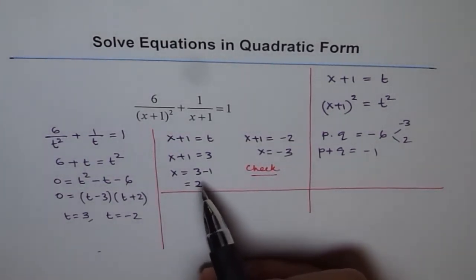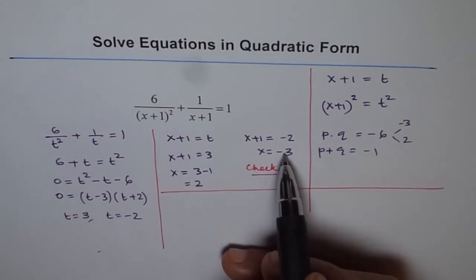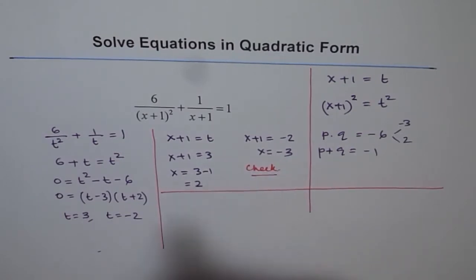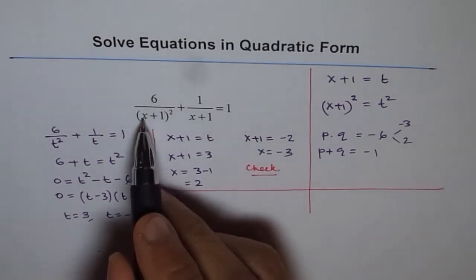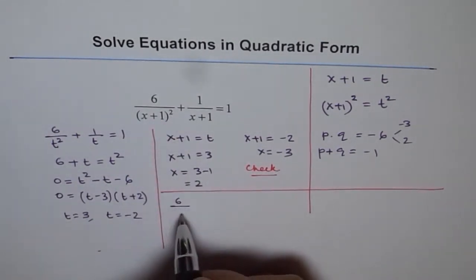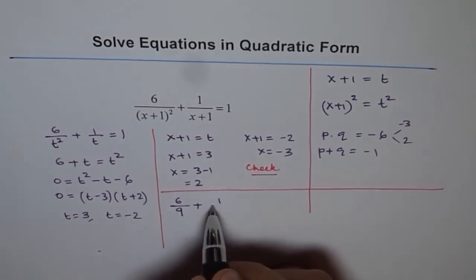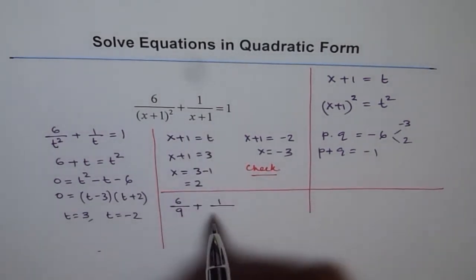So we are saying that x is minus 3 or x equals 2. So let's plug 2 here. So we get 6 over 2 plus 1 is 3, 3 square is 9. Plus 1 over x is 2, 2 plus 1 is 3. That is what we get.